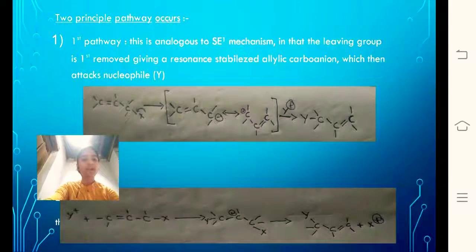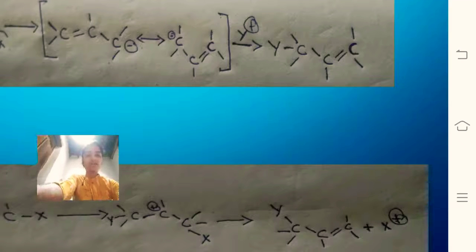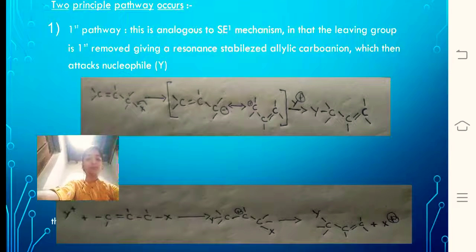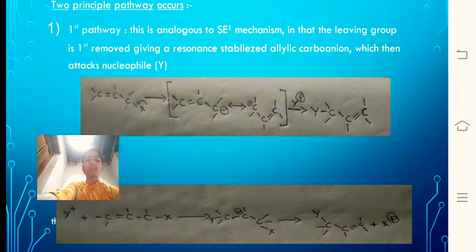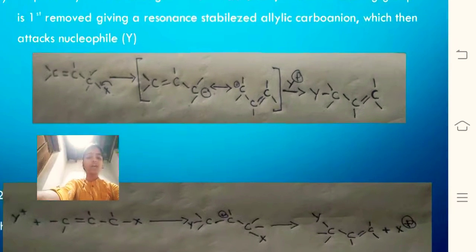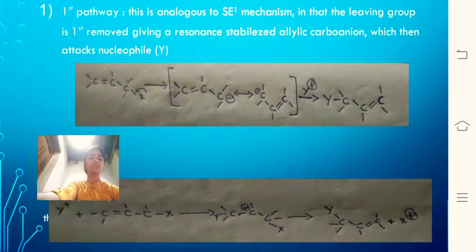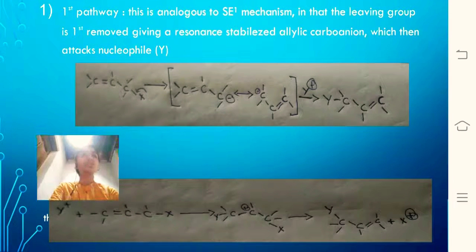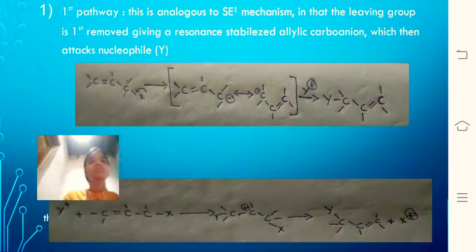To summarize these two alternating mechanisms: in the first pathway, the leaving group departs, forming a carbocation which undergoes rearrangement, and is then attacked by the electrophile. In the second mechanism, the electrophile is attacked by the double bond, leading to a carbocation, which is followed by removal of X⁺ as the leaving group, resulting in the formation of a new double bond at the rearranged position.